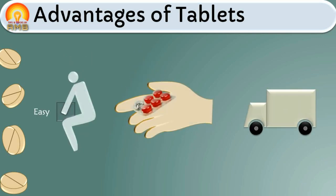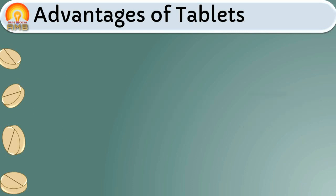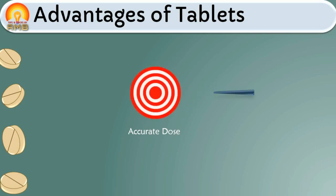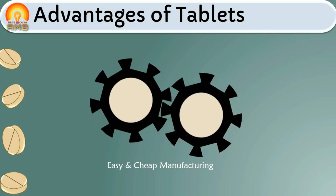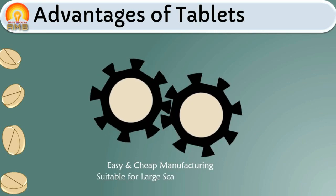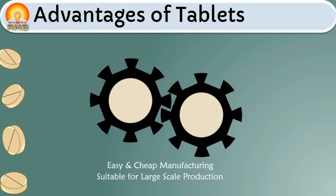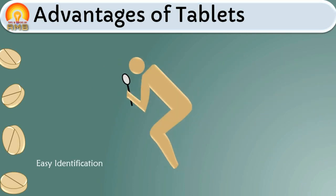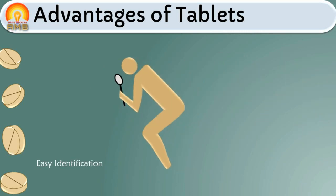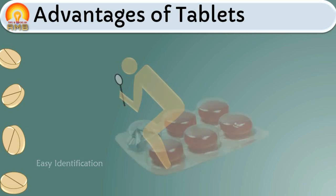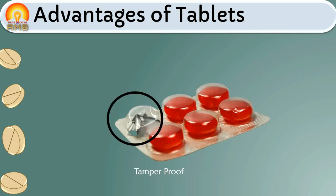Each tablet contains a uniform dose, hence they are better in accuracy and precision of dose. Tablets are easy and cheap to manufacture and pack compared with other dosage forms, and are suitable for large-scale production. Identification of tablets is simple, as tablets can be available in various sizes and shapes, and embossing on the tablet is also possible.